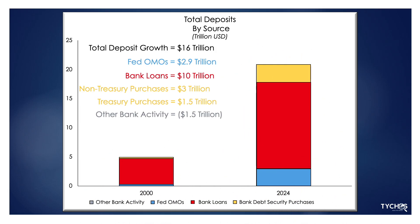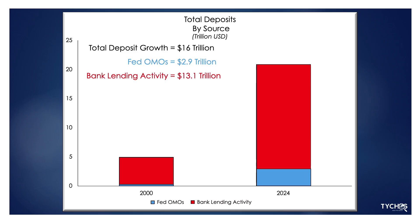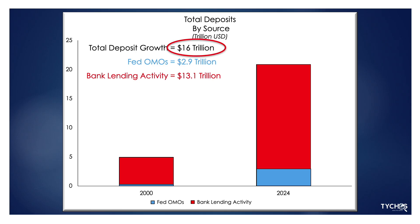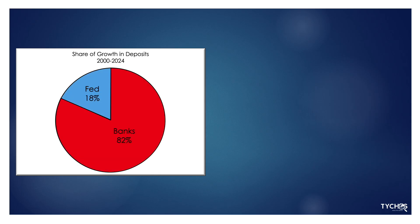To consolidate all of this into two simple statements: bank lending and related activity created $13.1 trillion, and Fed open market operations created $2.9 trillion. Together, those are the source of the $16 trillion in deposit growth from 2000 to 2024. This means banks created 82% of all deposits in this period, and Fed open market operations created 18%.